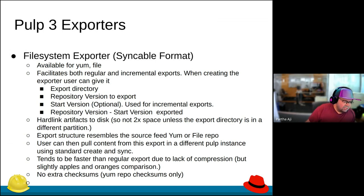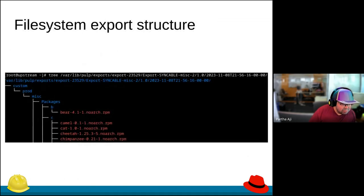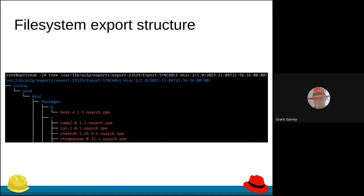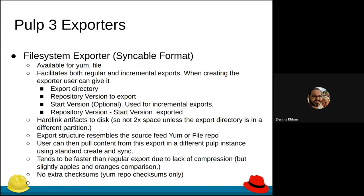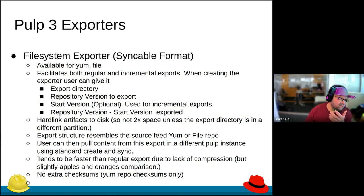One of the things people really appreciated is the export structure resembles the source feed of a yum or file repo. Here's a sample export via the syncable format — you can see how it looks like a yum repo. It is in fact a yum repo — it includes the metadata. So the downstream user can just pull content from this yum repo like a standard yum repo — they can create and sync or mirror from it.